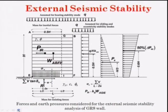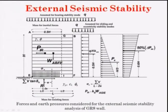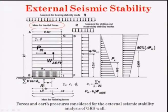Looking at the bigger picture: a soil mass has been reinforced with geosynthetics. The external loads include surcharge, soil earth pressure, and seismic load. You find the resultant, check where it acts — at the CG or at a distance of eccentricity E — then check that E ≤ B/6. Also shown are the mass inertia forces σ_B, P_IR forces, and earth pressures for external seismic stability analysis of GRS walls.